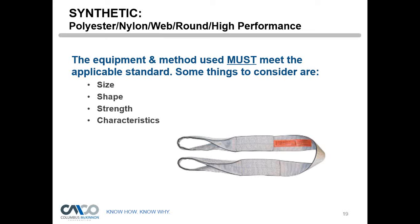Synthetic straps are economical and comfortable, and they don't damage the load if tightened too much. However, they are susceptible to damage more easily than wire rope or chain. You'll see cuts and chemical damage. Knots are something you never want to see in any kind of strap. If you see any of this damage, take it out of service — it's an accident waiting to happen. If a DOT officer sees it, he'll likely take you out of service as well.